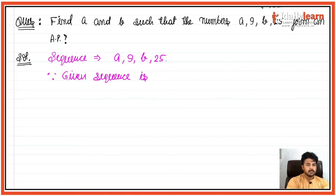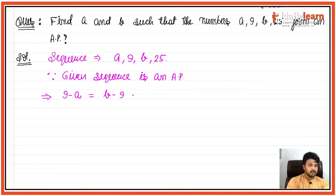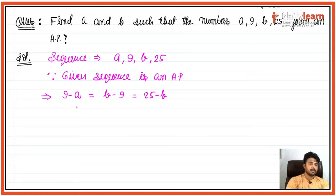Since the given sequence is an AP, isliye 9 minus a is equal to b minus 9 is equal to 25 minus b. Yeh equation banega kyunki AP mein sabka common difference barabar hota hai.